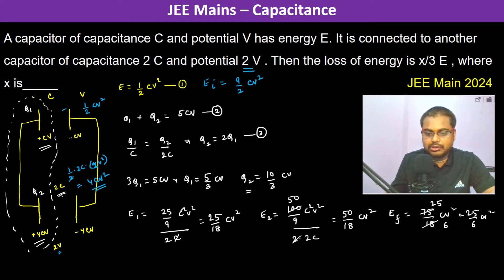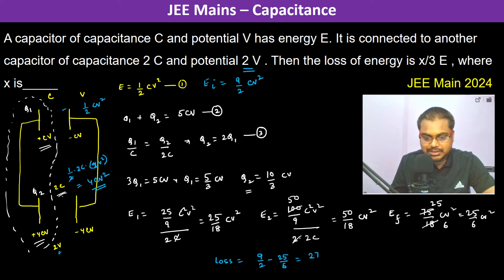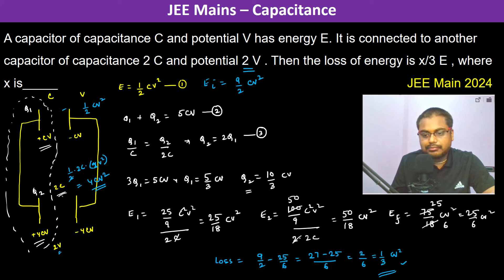The energy loss is initial minus final: 9/2 minus 25/6, which equals 27/6 minus 25/6, giving 2/6, which simplifies to 1/3 CV².